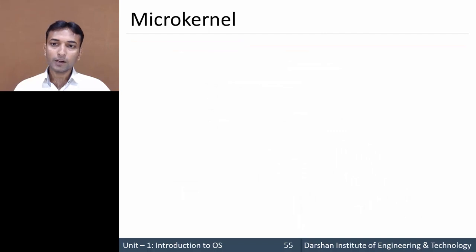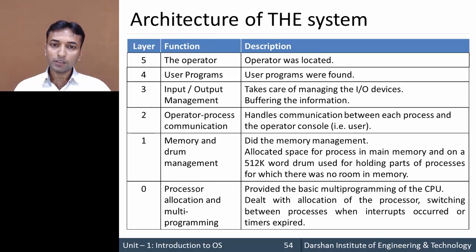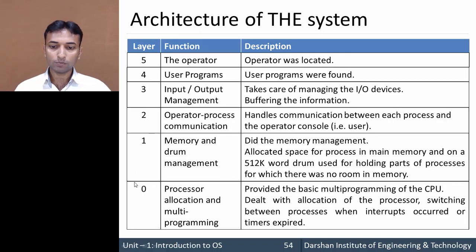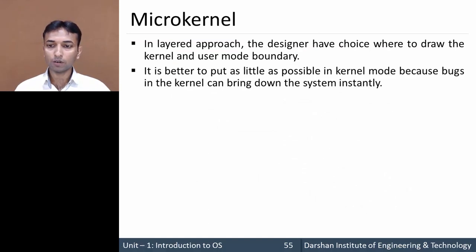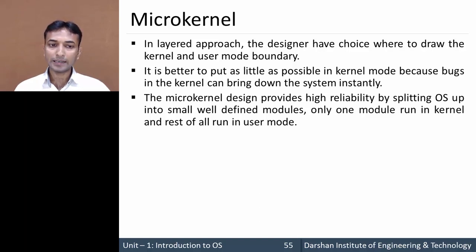The next structure is the micro kernel. In the layered approach, the user has a choice of where to draw the kernel and user mode boundary. It is better to put as little as possible in kernel mode, because if a bug in the kernel arises it will bring the system down instantly. The micro kernel provides high reliability by splitting the operating system into small, well-defined modules, with only one module running in kernel mode and the rest running in user mode.